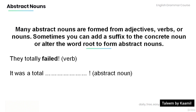Remember that many abstract nouns are formed from adjectives, verbs, or nouns, and sometimes you can add a suffix to a concrete noun or alter the word root to form abstract nouns. Read the following sentences and fill in the blank with the appropriate abstract nouns. 'They totally failed.' — 'I was a total failure.'